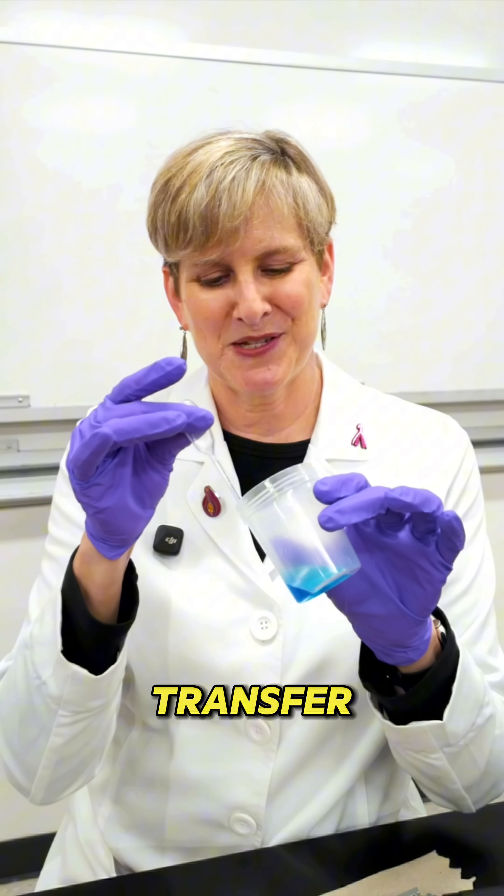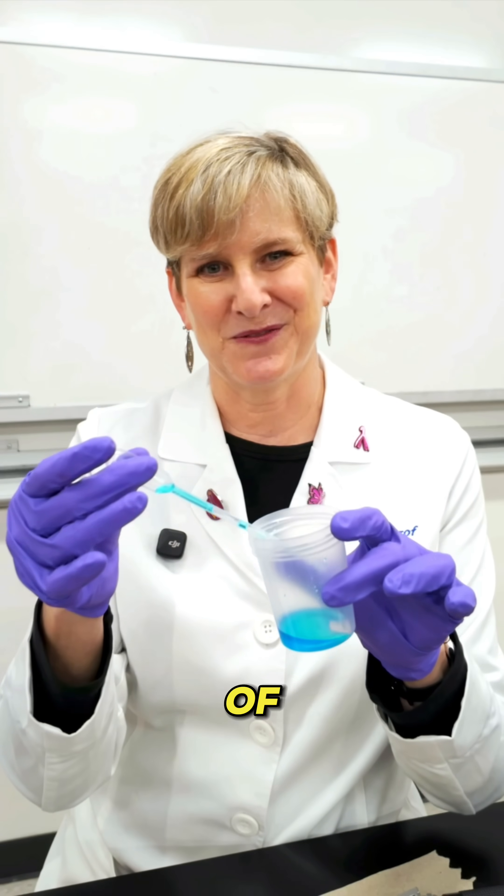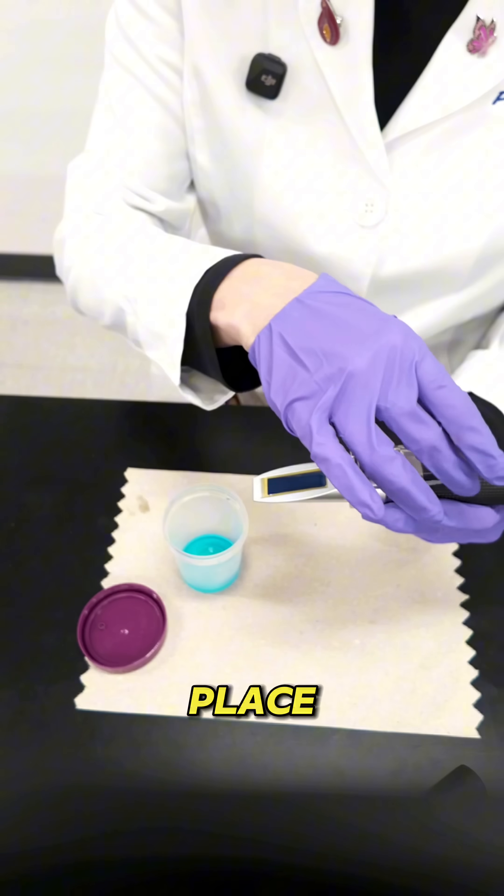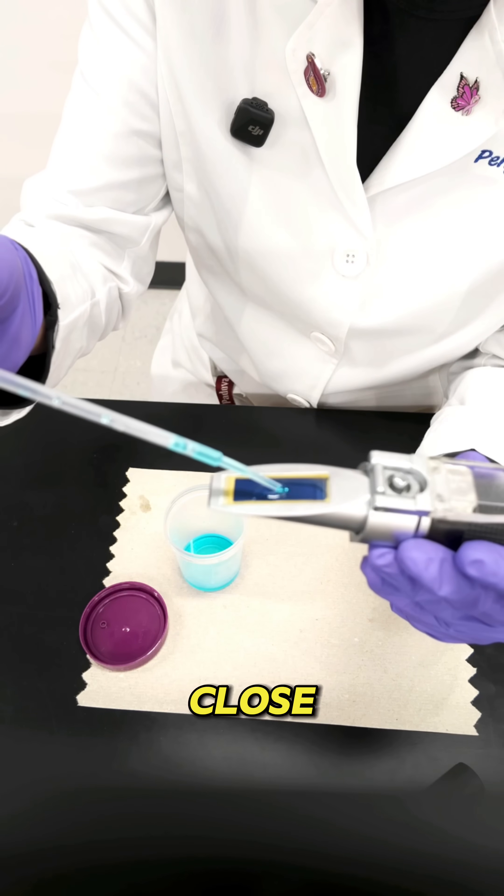Get yourself a transfer pipette, these are disposable, you only need a couple of drops. Lift the lid and place two to three drops on the window and then close the lid.